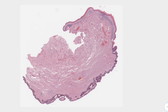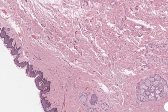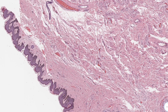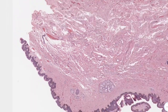At low power, we can see that this area looks quite different from this area. Looking at the normal area more closely, we can see the epidermis with these projections called rete pegs, or rete ridges — those are the ones visible here.